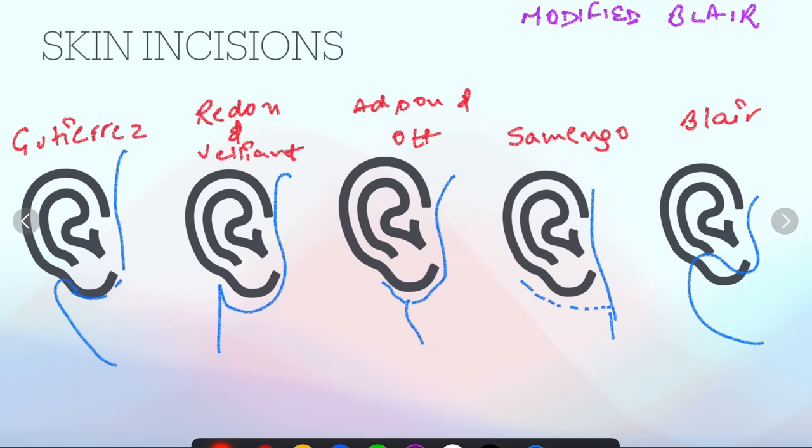For these incisions we have six options. First one is Guttirez, second is given by Redon and Valiant, third is Adson and Ott, fourth one is Samingo, fifth is Blair, and sixth one is the Modified Blair which we are currently using.